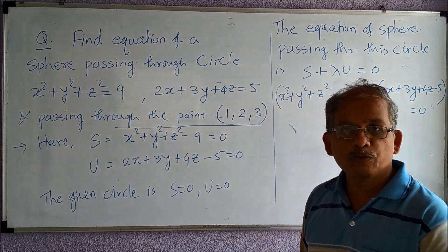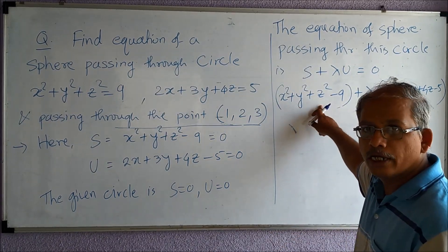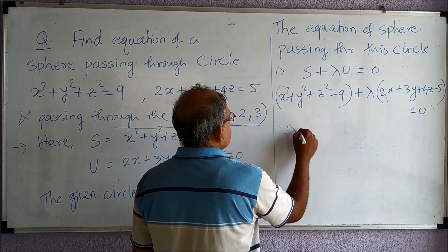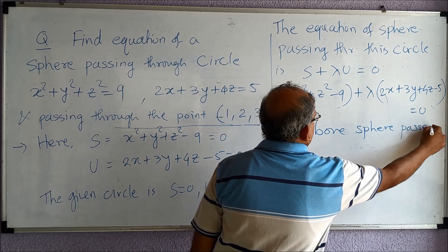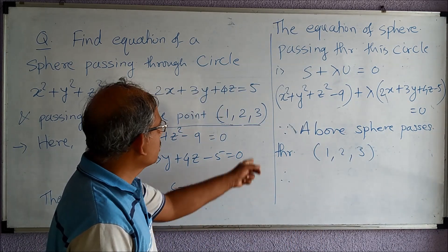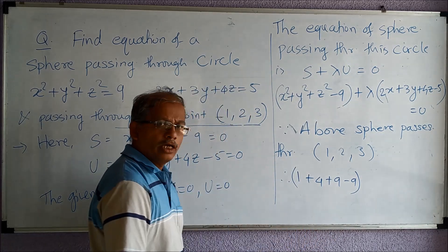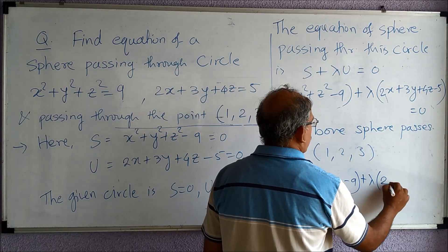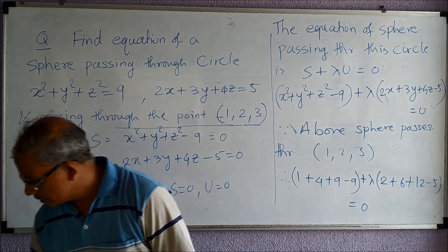Since the sphere passes through the point (1, 2, 3), this point must satisfy the equation of the sphere. Substituting, we have: 1 plus 4 plus 9 minus 9, plus λ times (2 plus 6 plus 12 minus 5) equal to zero. Let us simplify this equation to get our λ value.